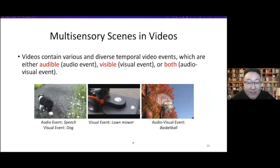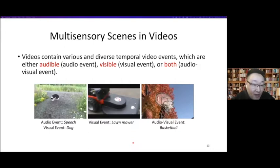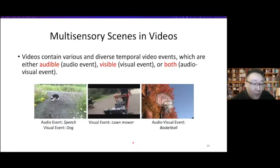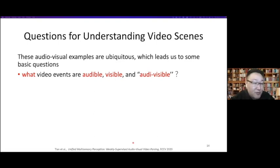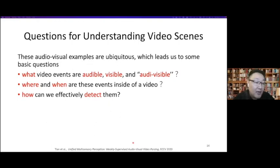In audio-visual event localization we focus on video segments containing synchronized audio-visual content. Moving forward, there are various and diverse temporal video events which are either audible, visible, or both, and they can be mixed together in videos. For example, we can have on-screen speech, a dog visible in the video, a lawnmower not making sound, and a bus whose sound we can hear. This motivates some basic questions: what video events are audible, visible, or audio-visual? Where and when are these events inside the video? How can we effectively detect them?